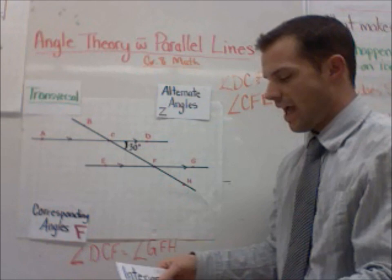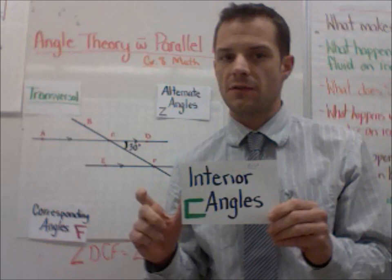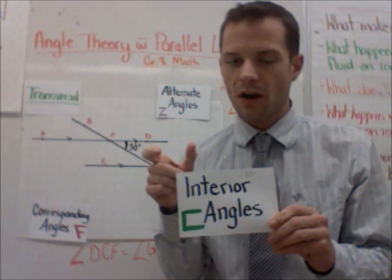The last type of angle that we're going to look at today are these guys. Now, interior angles, these are not angles that are equal to each other, but they do give us an important piece of information because basically, together, these two angles are going to form a 180 degree plane.